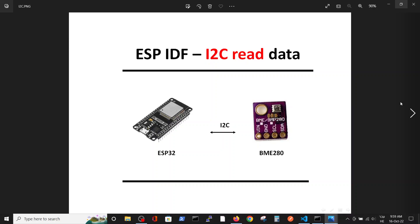In this video we are going to talk about I2C communication, which is mostly used inside an electronic board or between two electronics boards placed nearby each other. In this particular example we will use the BME280 sensor, which measures temperature, pressure and humidity, and connect it with ESP32 via I2C communication. All this will be done inside the ESP-IDF environment.